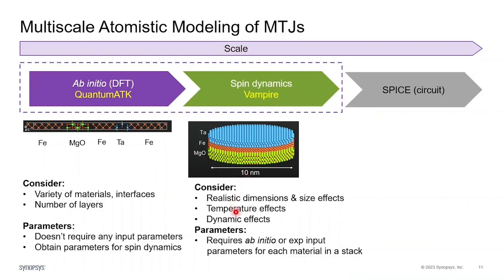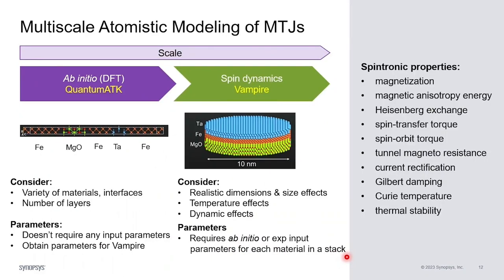A user can consider realistic dimensions and size effects, temperature effects, and dynamic effects with spin dynamics simulations. But these simulations require ab initio or experimental input parameters for each material in a stack. When using multiscale atomistic modeling of MTJs, one can calculate a variety of spintronic properties, such as magnetization, magnetic anisotropy energies, spin transfer and spin-orbit torques, tunnel magnetoresistance, Curie temperature, and thermal stability.